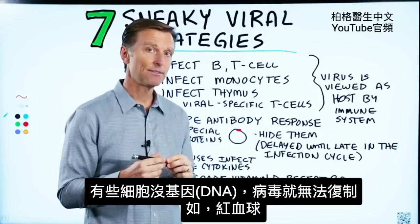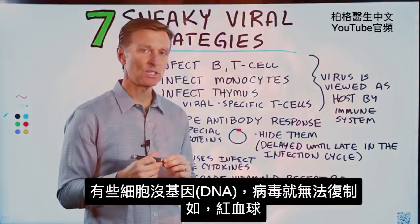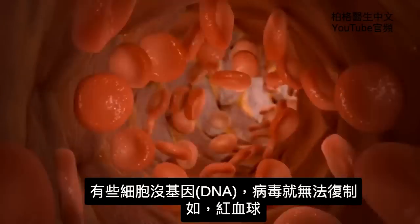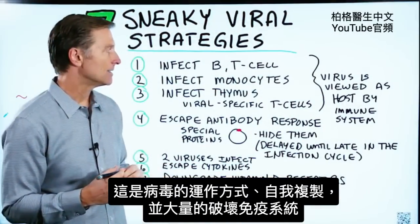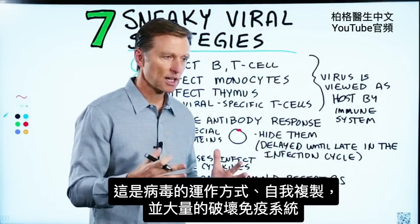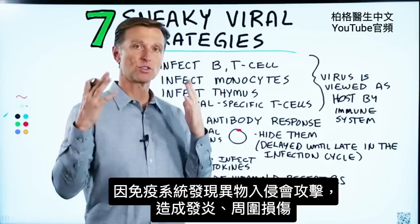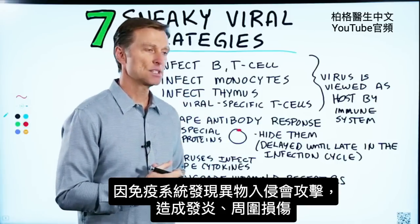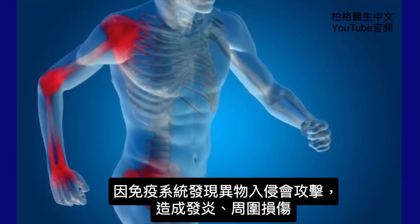Certain cells that don't have DNA, like your red blood cells, they can't really do anything to those. So viruses start reproducing and create a lot of damage within your immune system, because your immune system sees an invader and creates inflammation and collateral damage.